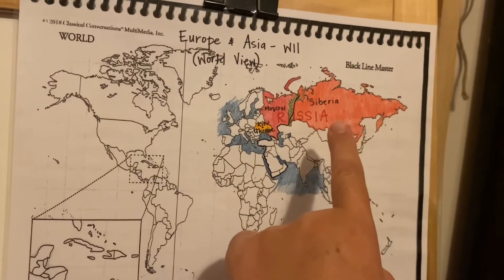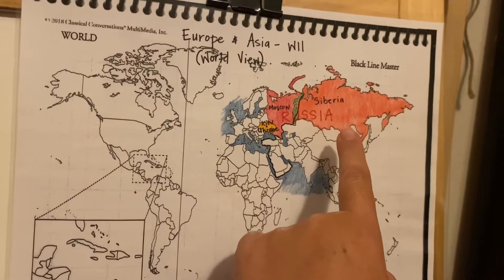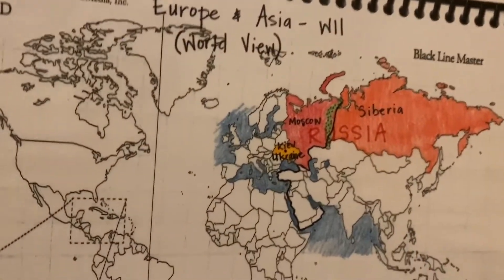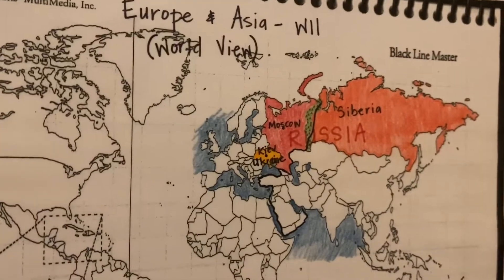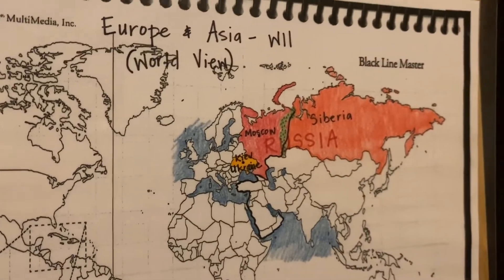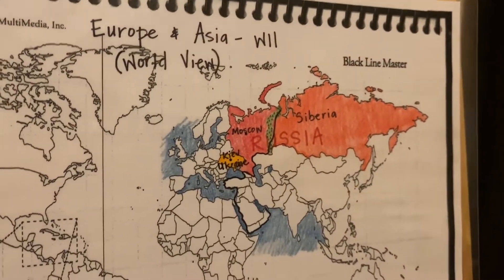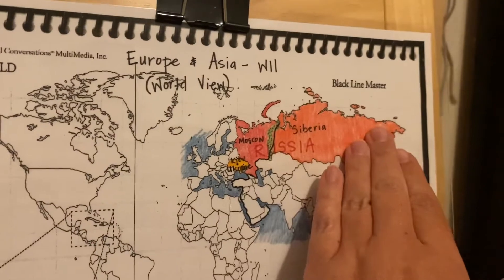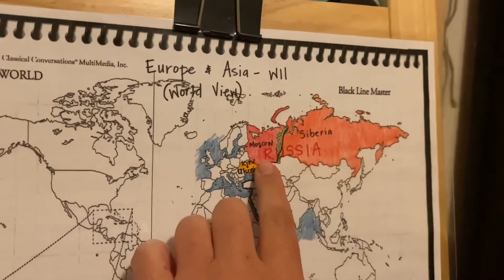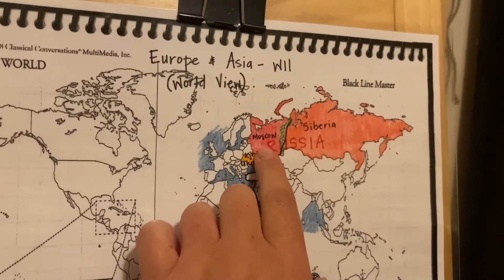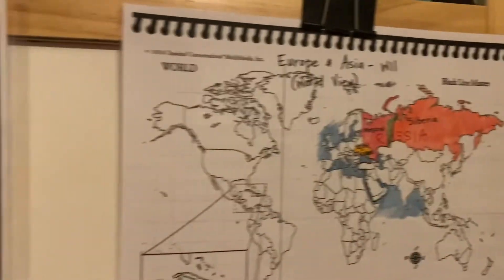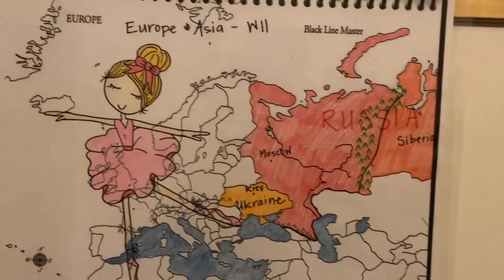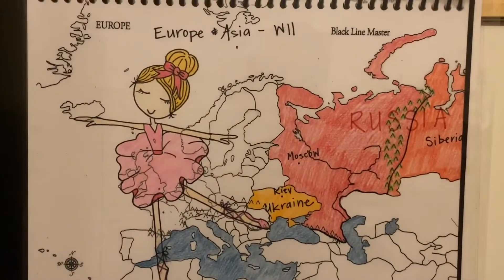Most of the people who live in Russia live on the European side, because Siberia — this region — is a frigid tundra. We've already learned that the tundra biome is kind of like a desert but with ice rather than dry land — an icy desert. So there's not a lot of people who live over there. Now let's go back to this map and sing our song.